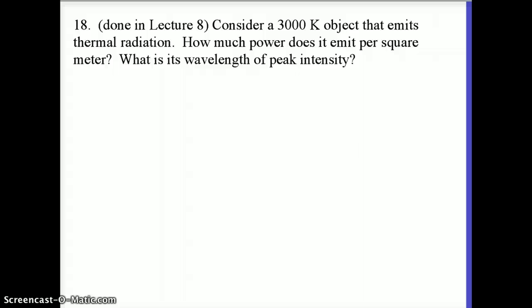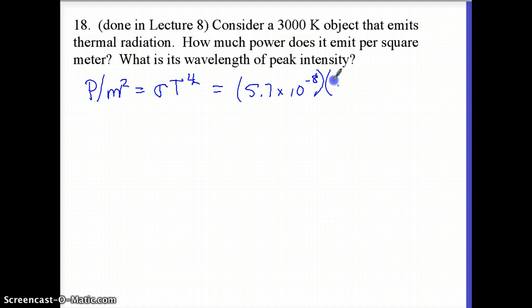So, the power per square meter is given by the Stefan Boltzmann law, sigma T to the fourth. Sigma is 5.7 times 10 to the negative eighth. And then I'm going to do the temperature to the fourth power. So, very, very strong temperature dependence. And that comes out to be a pretty big number. 4.6 times 10 to the sixth watts per square meter.